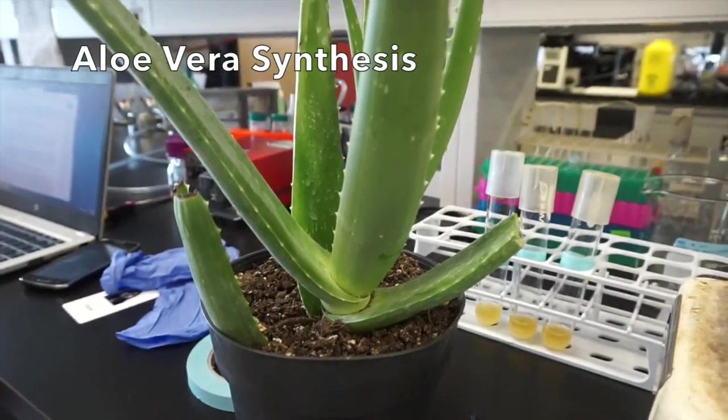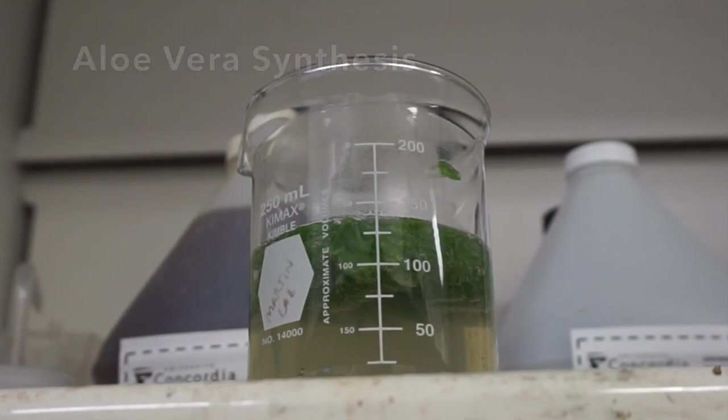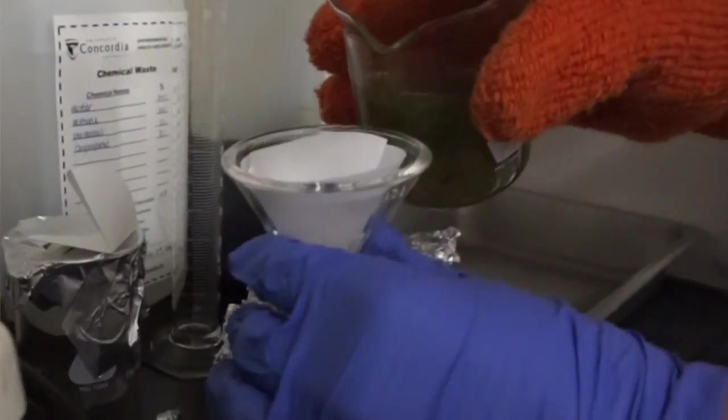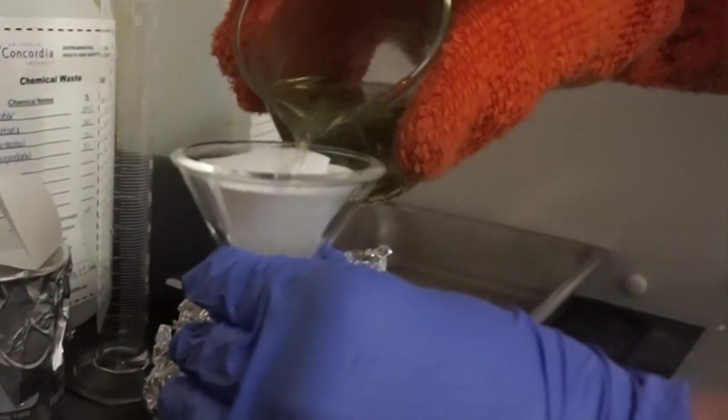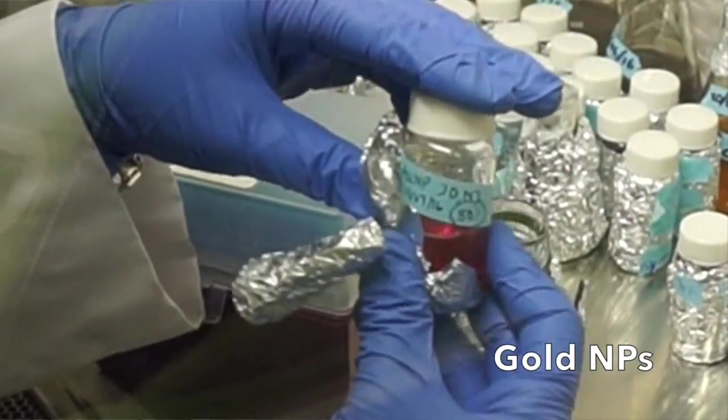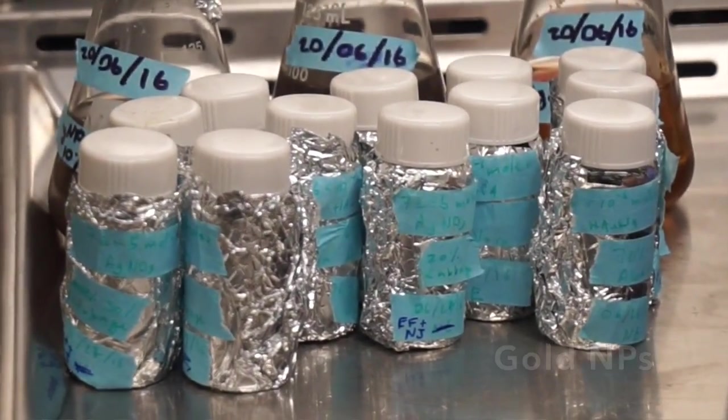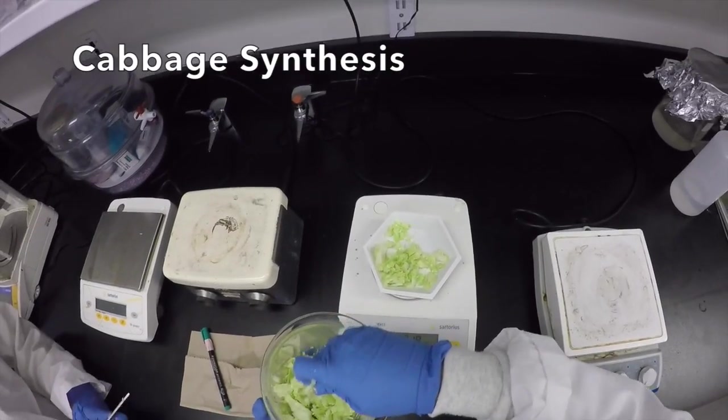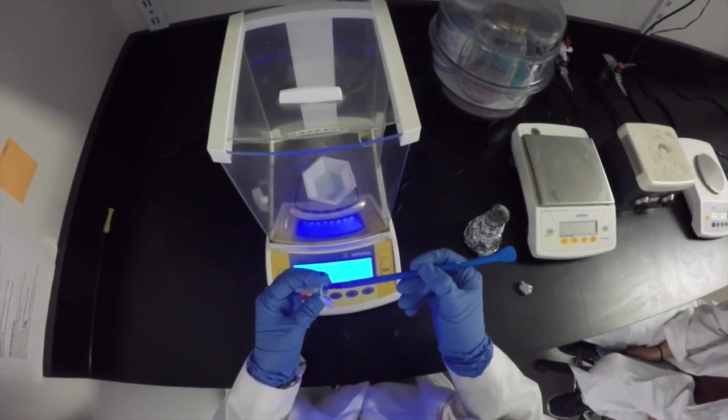Similar to the garlic synthesis, aloe vera extract is used to synthesize gold nanoparticles. However, these nanoparticles are triangular, and their size depends on the amount of extract used. The greater the volume of the extract, the smaller the nanoparticles will be. Cabbage extract is used to synthesize silver nanoparticles, unlike the other plant extracts used.